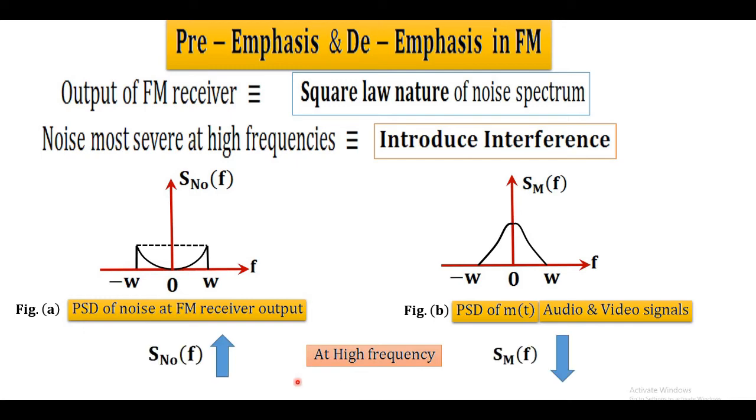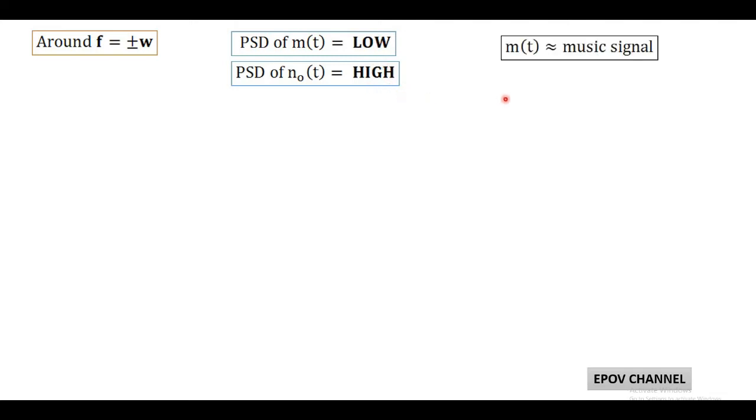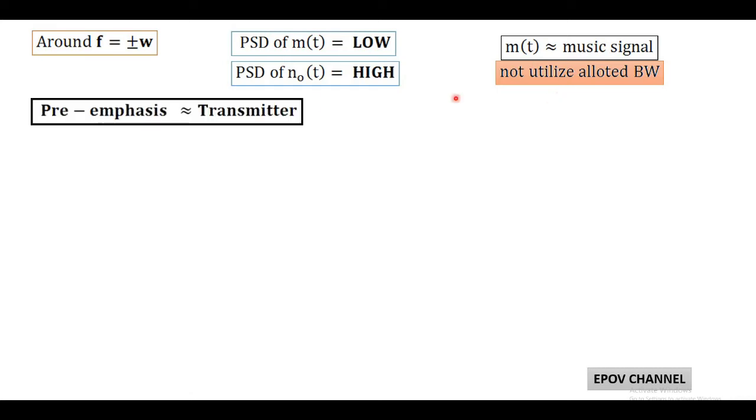Therefore, at high frequency, power spectral density of output noise increases rapidly with respect to frequency and the power spectral density of message signal falls appreciably. Around the frequency of ±W, message power spectral density becomes quite low and output noise power spectral density becomes quite high. Because of this effect, message signal, especially music signal, is not able to utilize its own allotted bandwidth very effectively. So there is a requirement of another efficient way to utilize this allowable frequency bandwidth. This method is based on modification in FM communication system. At the transmitter, we have to do pre-emphasis process and at the receiver, de-emphasis is performed.